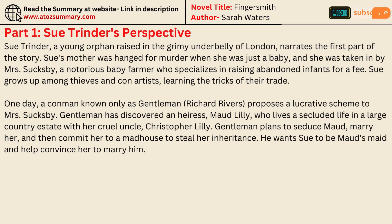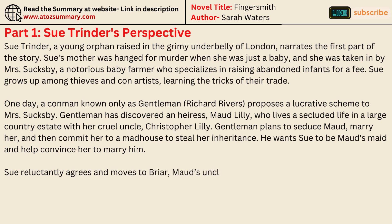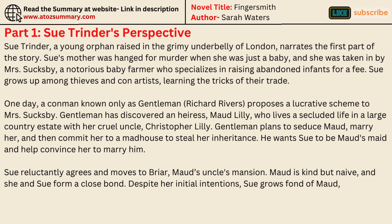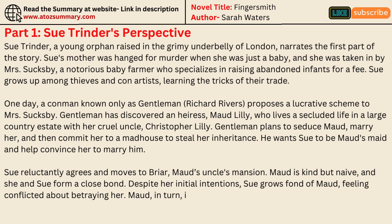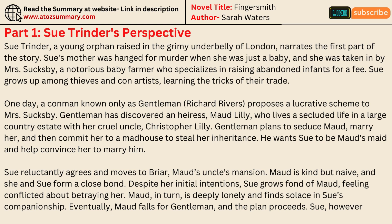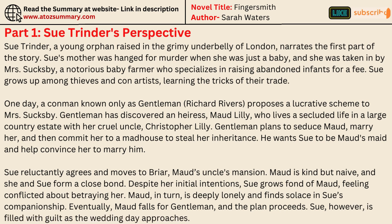Sue reluctantly agrees and moves to Briar, Maude's uncle's mansion. Maude is kind but naive, and she and Sue form a close bond. Despite her initial intentions, Sue grows fond of Maude, feeling conflicted about betraying her. Maude, in turn, is deeply lonely and finds solace in Sue's companionship. Eventually, Maude falls for Gentleman and the plan proceeds. Sue, however, is filled with guilt as the wedding day approaches.